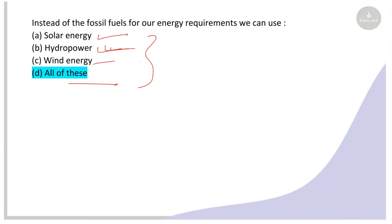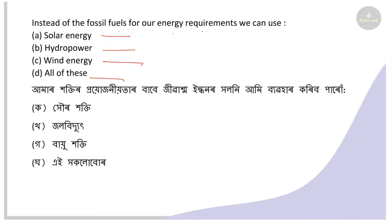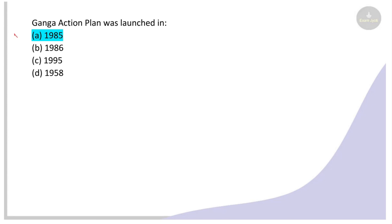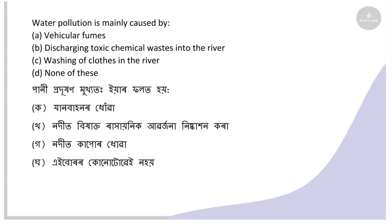Using solar energy, hydropower, and wind energy can help reduce air pollution compared to fossil fuels. Next: The Ganga Action Plan was launched in which year? Options: 1985, 1986, 1995, 1958. The right answer is 1985 — the Ganga Action Plan was launched in 1985.